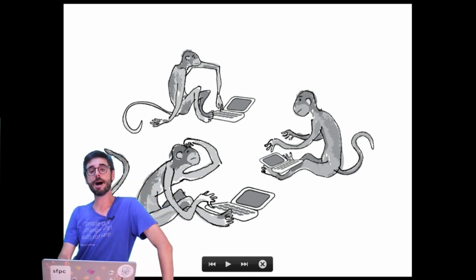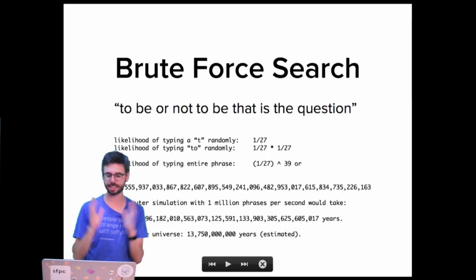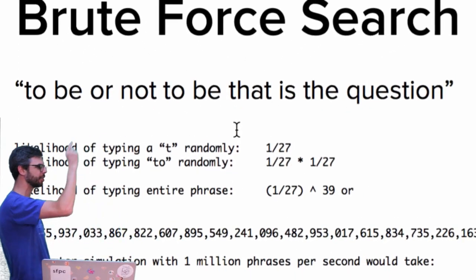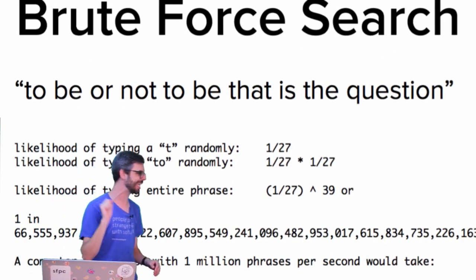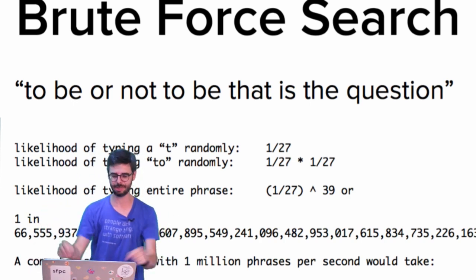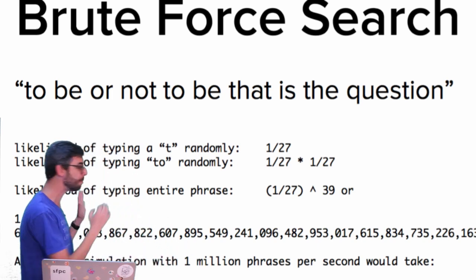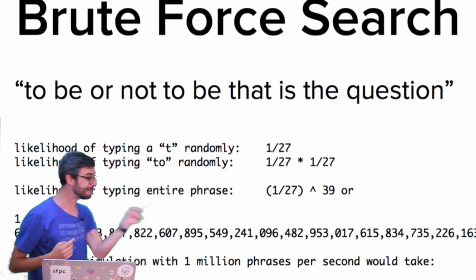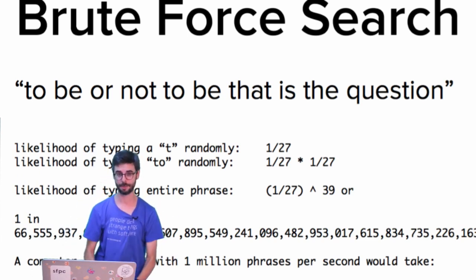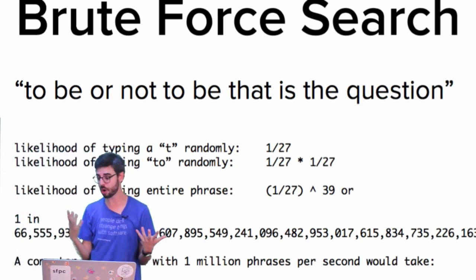Let's say there's a computer simulation of a monkey. Let's simplify the problem and say that the only thing we care about is the phrase 'to be or not to be, that is the question.' That phrase has 39 characters in it. And let's say we have a simplified keyboard with only 26 lowercase letters, A through Z, and the space bar — that's 27 keys in total.